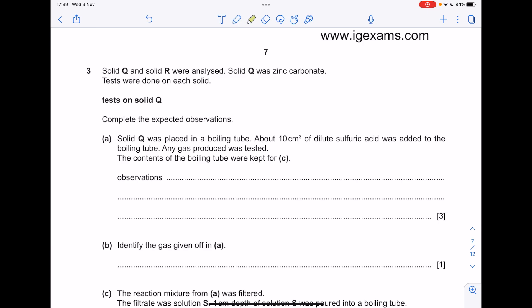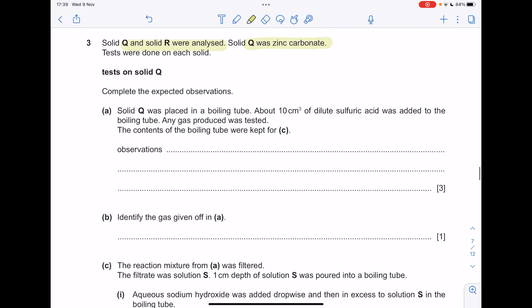Solid Q and solid R were analysed. Solid Q was zinc carbonate, tests were done on each solid. Solid Q was placed in a boiling tube. 10 centimetres cubed of sulphuric acid was added. Any gas produced was tested. So you've got zinc carbonate. You're adding sulphuric acid. What are you going to make? A salt, which is zinc sulphate, plus water, plus carbon dioxide.